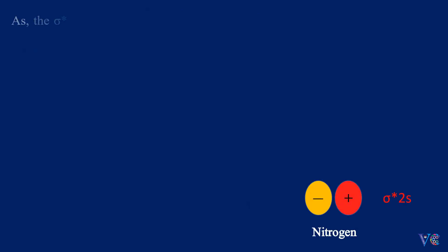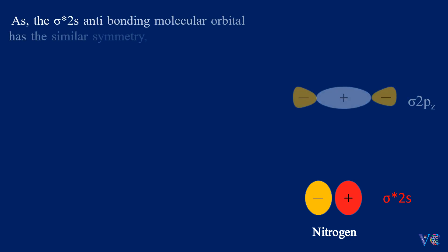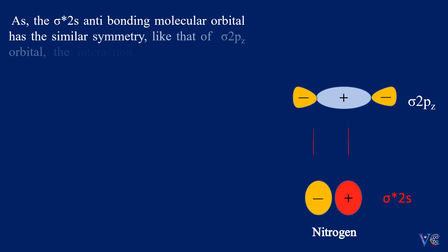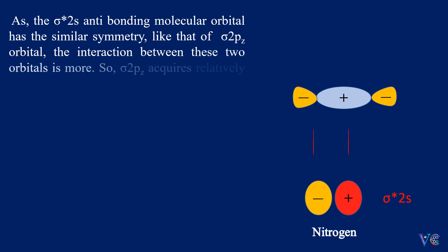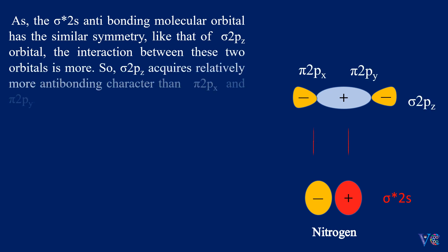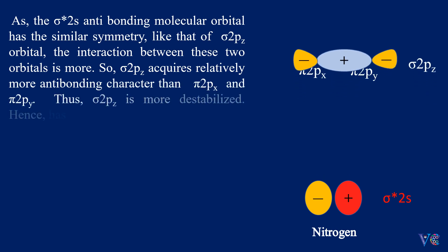As the σ*2S antibonding molecular orbital has similar symmetry to that of the σ2Pz bonding molecular orbital, the interaction between these two orbitals is more. So σ2Pz acquires relatively more antibonding character than π2Px and π2Py. Thus σ2Pz is more destabilized and hence has more energy.